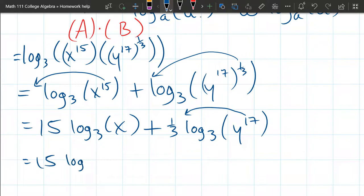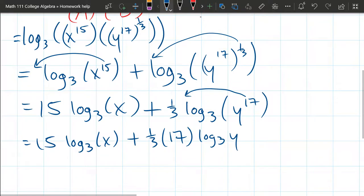And we're going to do the same thing with the 17 and bring it out front. So we have 15 log 3 X plus now we have one-third times 17 log 3 of Y. And of course, one-third times 17, there's no reduction at all because 17 is prime, so is 3. So we can't reduce. So I can already see B is 17 thirds and A is 15.